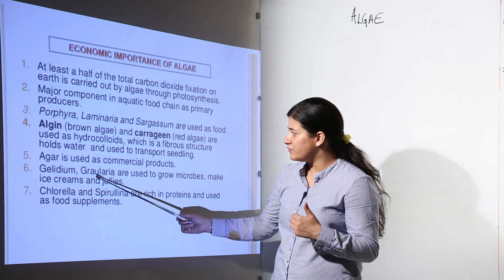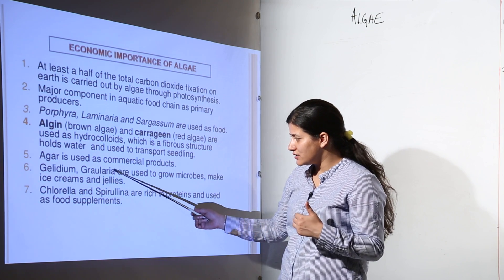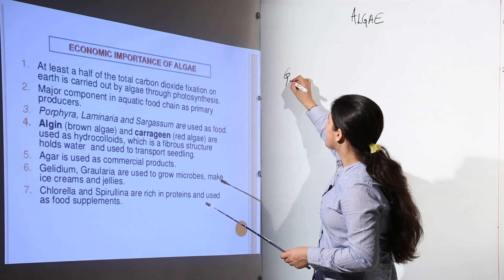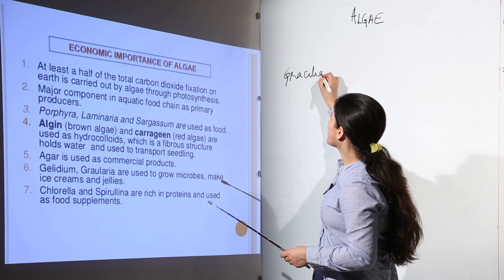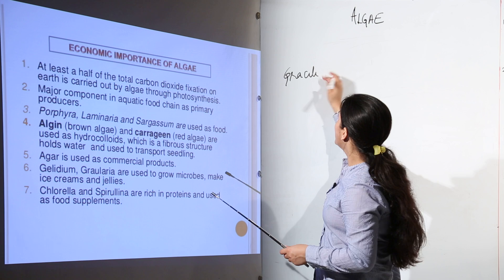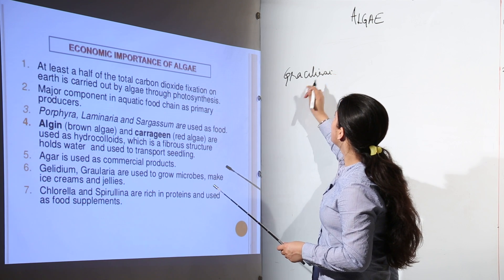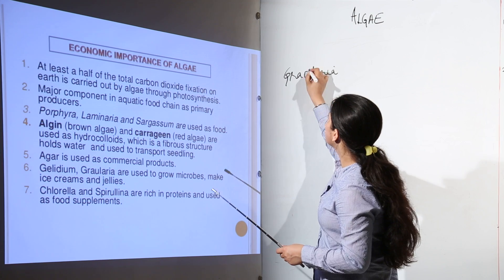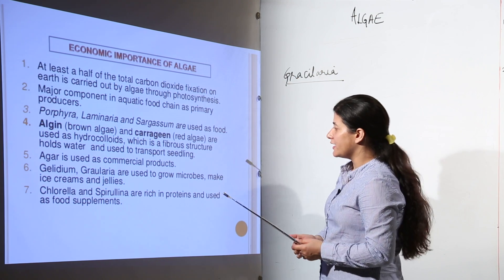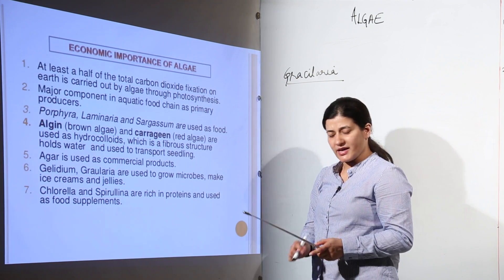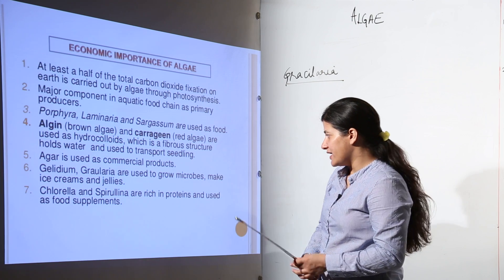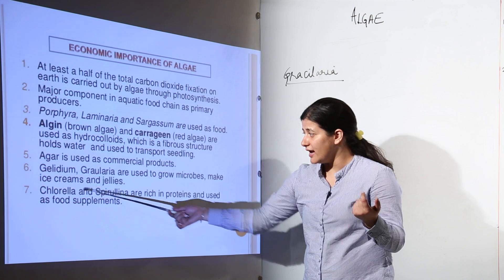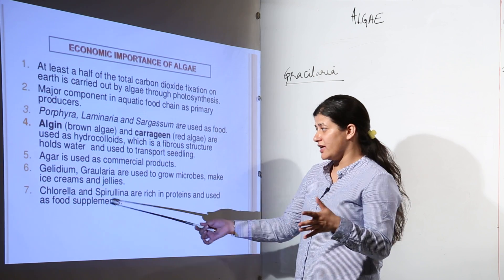Gelidium and Gracilaria are used to grow microbes, make ice creams, and jellies. Chlorella and Spirulina are green algae rich in proteins and are used as food supplements. People take spirulina tablets for their high nutrient content.